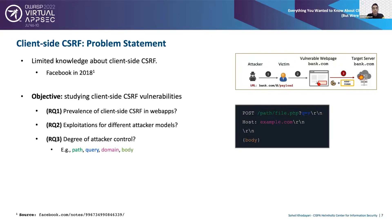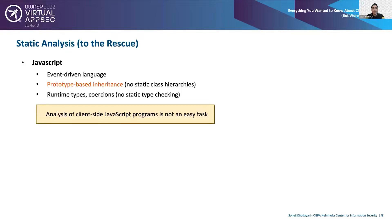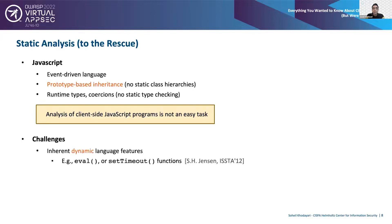To achieve our objective, we face several challenges from analyzing JavaScript programs, because client-side CSRF affects client-side JavaScript. JavaScript is an event-driven language with prototype-based inheritance, runtime types, and coercions — meaning no static class hierarchies and no static type checking. This dynamicity makes it difficult for tools to analyze JavaScript. For example, static analysis tools must deal with dynamic language features like eval, new Function, setTimeout, or setInterval, which accept a string and turn it into executable code at runtime.